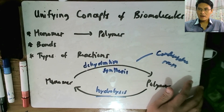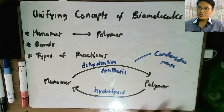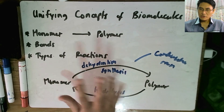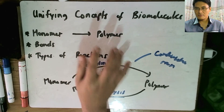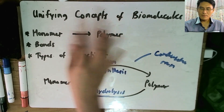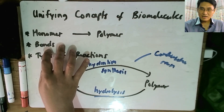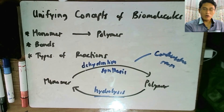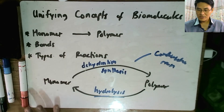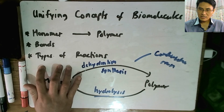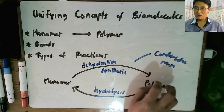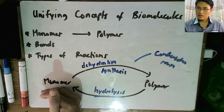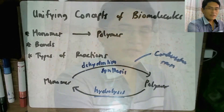To summarize this video: we looked at the unifying concepts of biomolecules — the concept of monomers forming into polymers and polymers breaking back into monomers, the bonds they form, and the two types of reactions involved: dehydration synthesis (or condensation) to build polymers, and hydrolysis to break them back down.